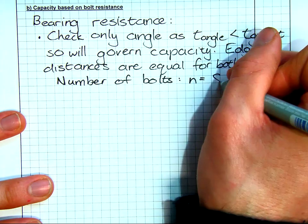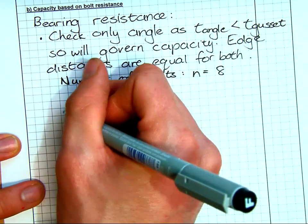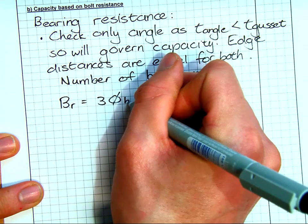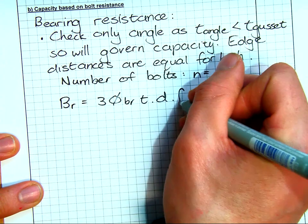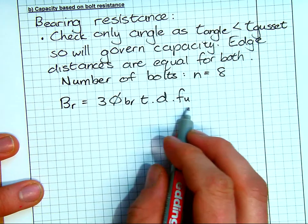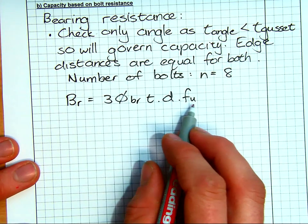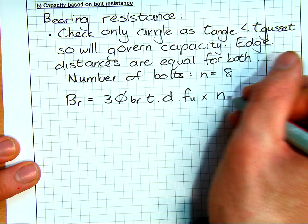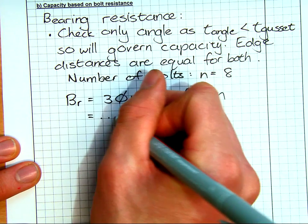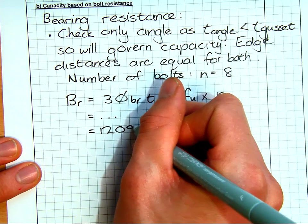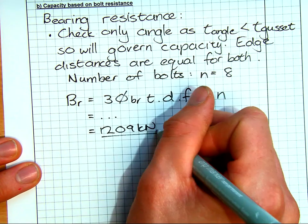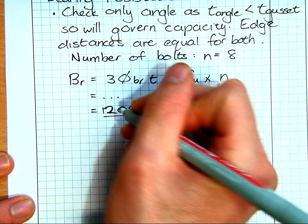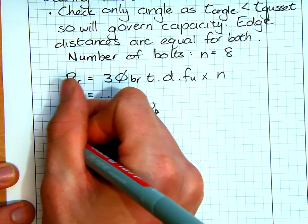Because the edge distance does influence the capacity of the section but the edge distance for the gusset plate is 40 mils and for the angle is 40 mils as well. So either of those could potentially govern but since they're the same the one with the thinnest plate will be critical. So now we're going to say number of bolts, we've got eight of them all in single shear and our bearing resistance is 3.5 br t d. And just be careful this is remember the ultimate of the steel that we're dealing with not the ultimate capacity of the bolt. And filling all those we get a force of 1209 kilonewtons.